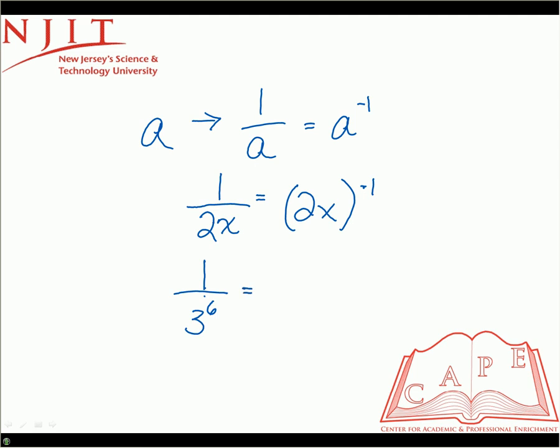The same thing is equal to 3 to the 6th, but instead of a 6, it's a negative 6. That would be the inverse, or it would not be the inverse, but it would be the same fraction, but written in the numerator.